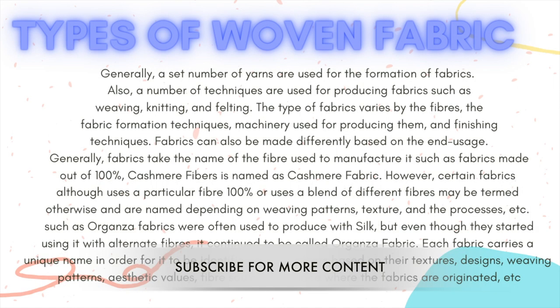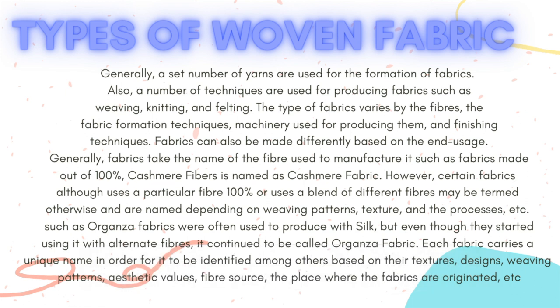Generally, a set number of yarns are used for the formation of fabrics. A number of techniques are used for producing fabrics such as weaving, knitting, and felting. The type of fabrics varies by the fibers, the fabric formation techniques, machinery used for producing them, and finishing techniques. Fabrics can often be made differently based on the end usage.